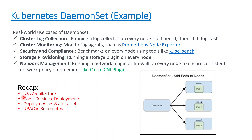Quick recap of what we've done in this playlist so far: we first understood Kubernetes architecture in plain English from a layman's perspective, then discussed pod services and deployments with practical working examples, then covered StatefulSet in detail - why and when to use it. Finally, we talked about RBAC - a very important concept in Kubernetes - covering role, role binding, cluster role, and cluster role binding. You can watch all those videos in the same playlist.